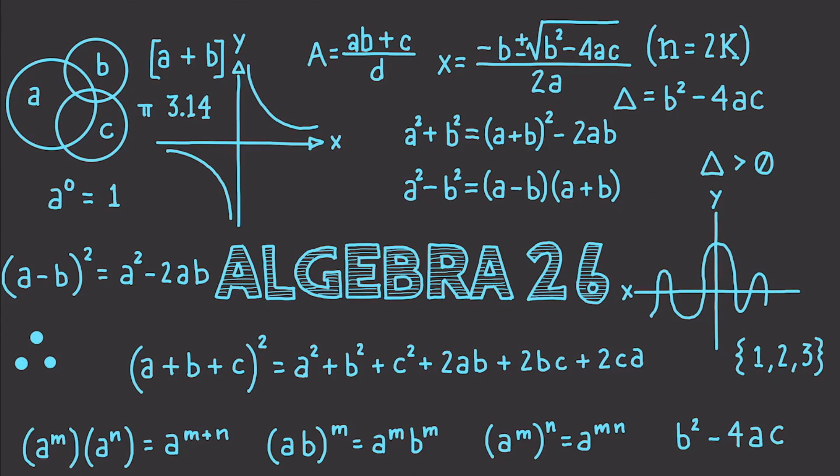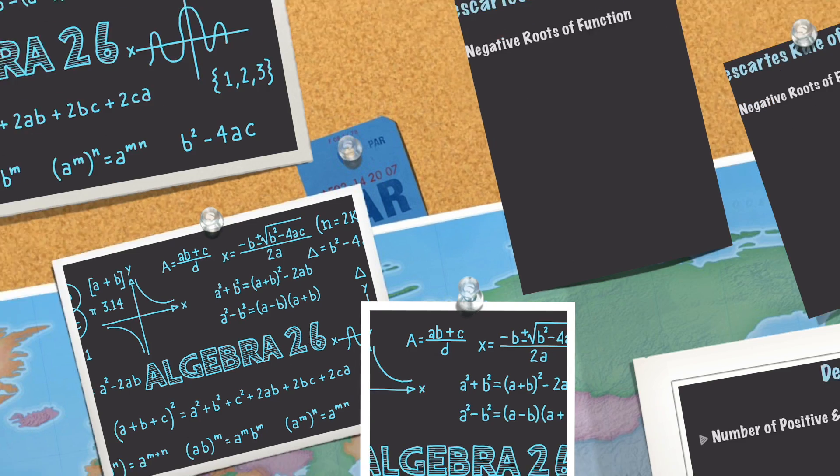Well hello internet and welcome to part 26 of my algebra tutorial series. In this part of the tutorial I'm going to talk about Descartes' rule of signs and the rational root test and how we can use both to solve equations. So I have a lot to do so let's get into it.